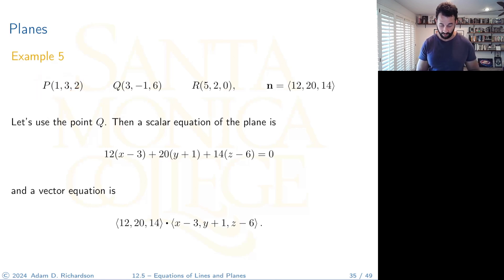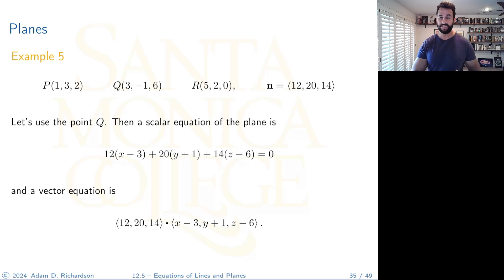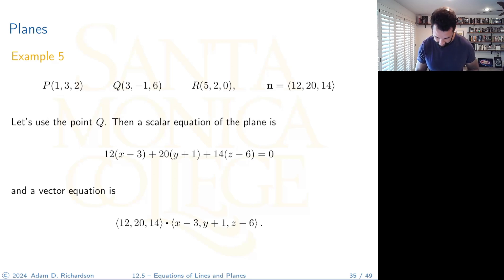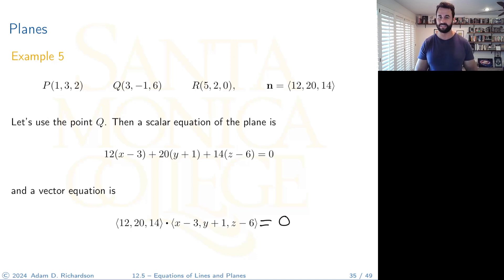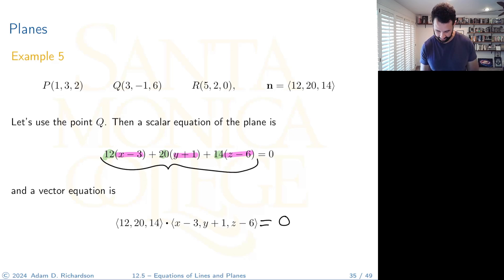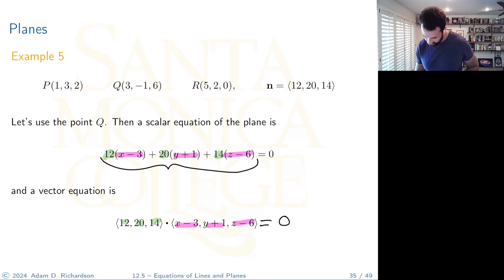Compute PQ⃗ and PR⃗, take their cross product to get the normal vector n = ⟨a, b, c⟩. Then using point Q and the normal vector, the scalar equation of the plane falls right out: a(x − x_Q) + b(y − y_Q) + c(z − z_Q) = 0. For the vector equation, write the same relationship as a dot product equal to zero.